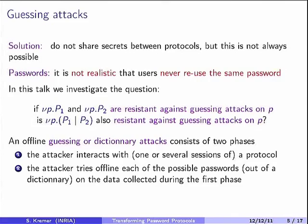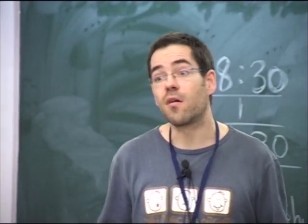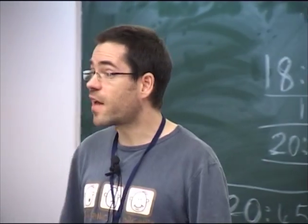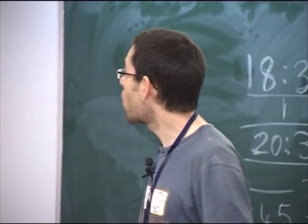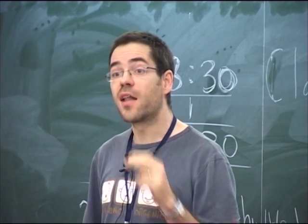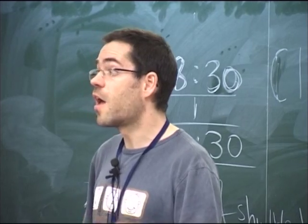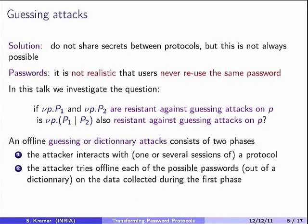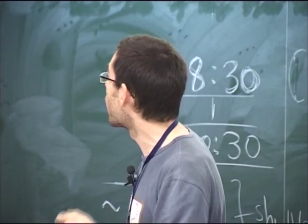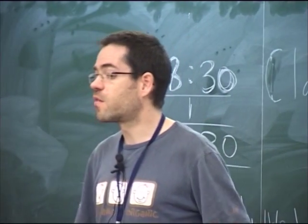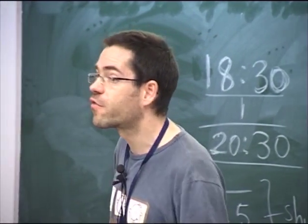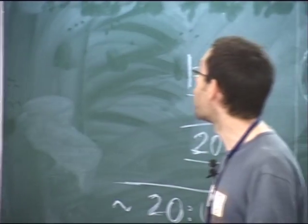What is an offline guessing or dictionary attack? Basically, you allow the attacker to interact with one or more sessions of the protocol in a first phase. Then in the second phase, the attacker uses all the recorded messages and tries to make an exhaustive search on the password to check whether it can find out what the password is. This is different from online guessing attacks, where an attacker executes one instance of the protocol for each password. You can avoid online guessing attacks with methods like using a timeout after each wrong guess, or blocking the account after five wrong attempts.